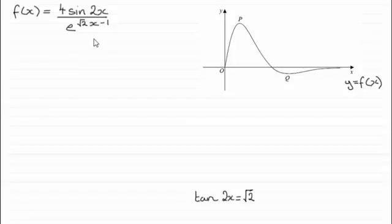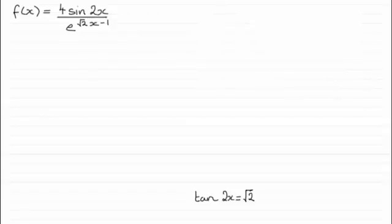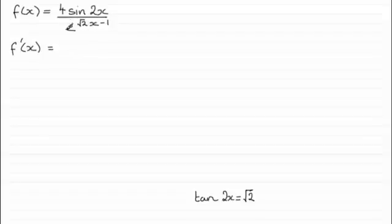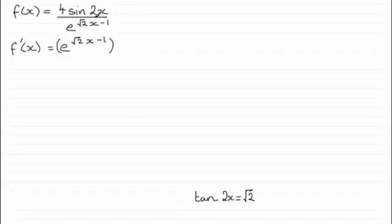I'm assuming you're familiar with the quotient rule — if not, do go back and check out my video tutorials on that. I'm going to remove this graph here as it's just going to be in the way. So when it comes to differentiating this with respect to x, we'll write that as f dash x, or f prime x as some of you might call it. Using the quotient rule, we take the denominator — e to the power of root 2 times x minus 1 — and multiply it by the differential of the top. We need to differentiate 4 sine 2x with respect to x, and you should know the result straight off: it's going to be 8 cosine 2x, obtained by the chain rule.